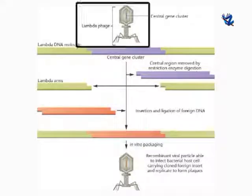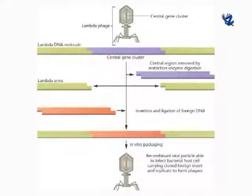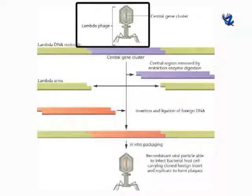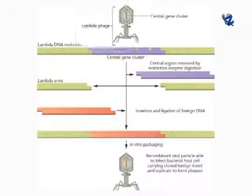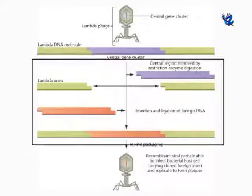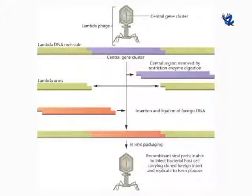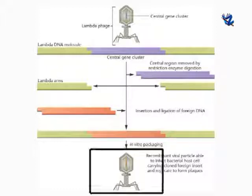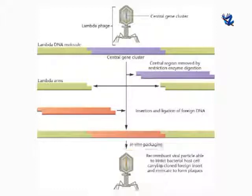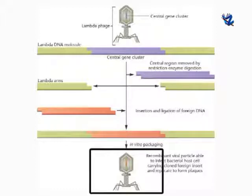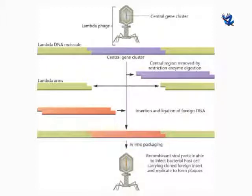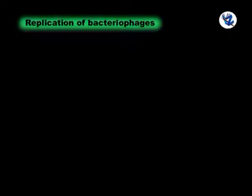Phage lambda as a vector: the cohesive cos ends allow the DNA to be circularized in the host cell. The recombinant DNA is then packaged within viral particles in vitro, and these are allowed to infect bacterial cells which have been cultured on agar.